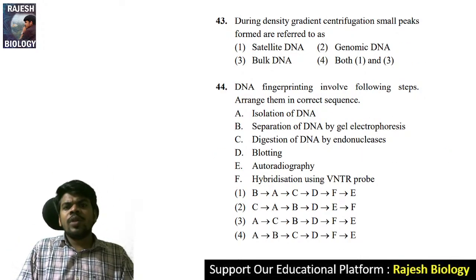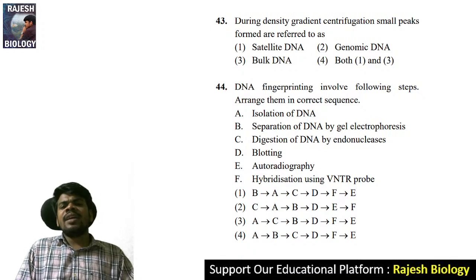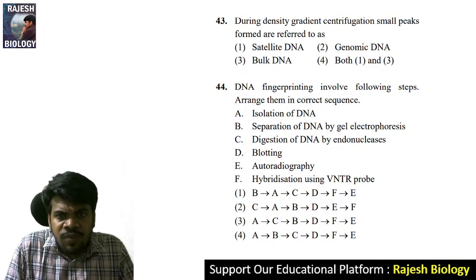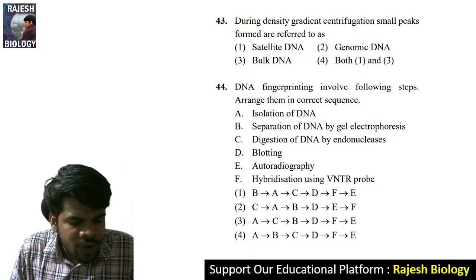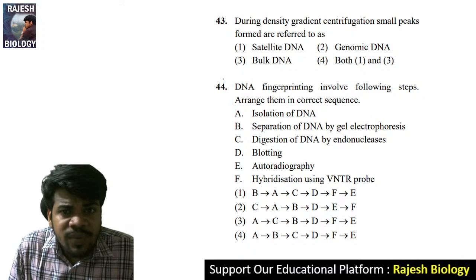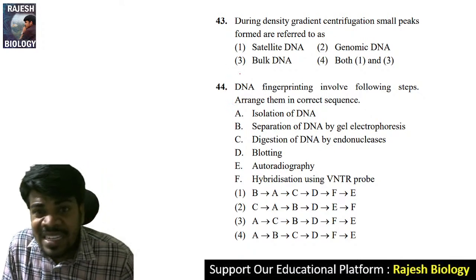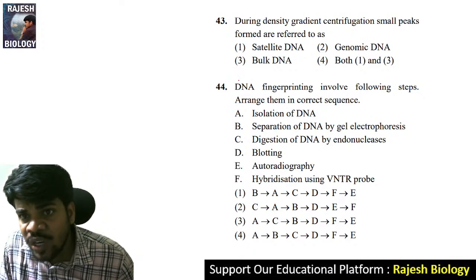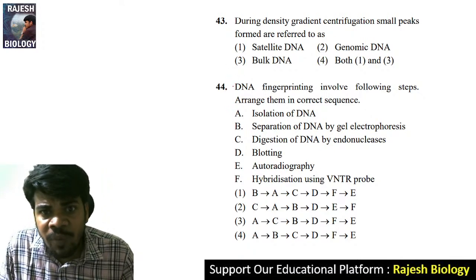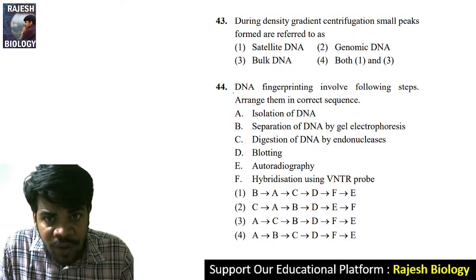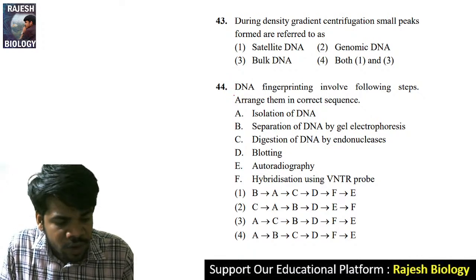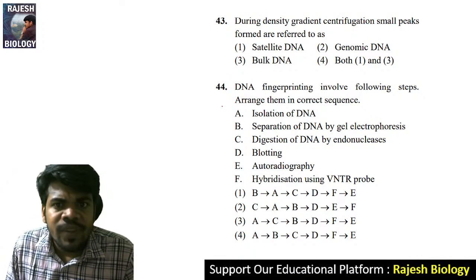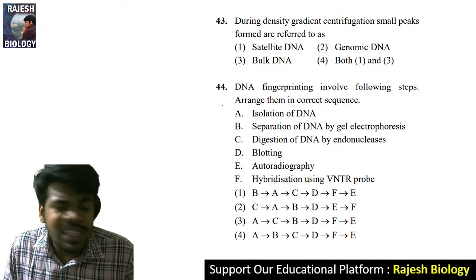Question 43: during density gradient centrifugation, small peaks formed are referred to as satellite DNA, genomic DNA, bulk DNA, or both one and three? The right answer is satellite DNA.